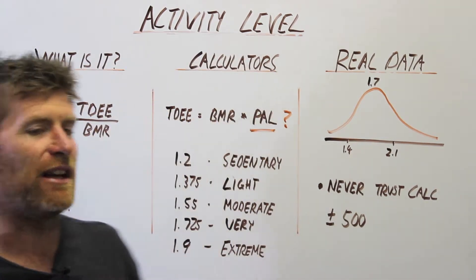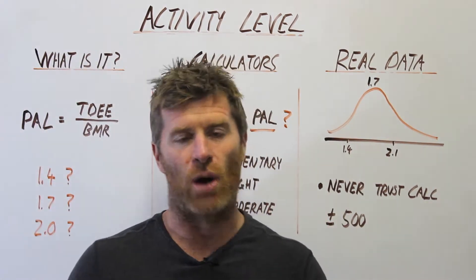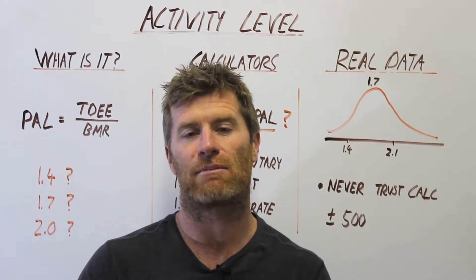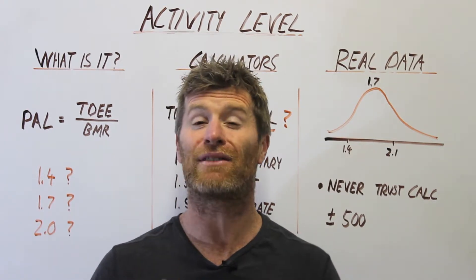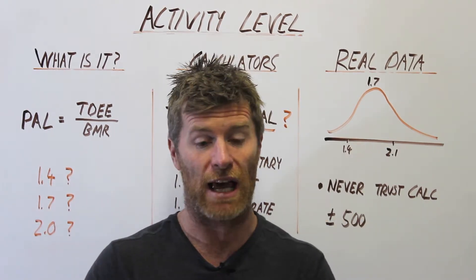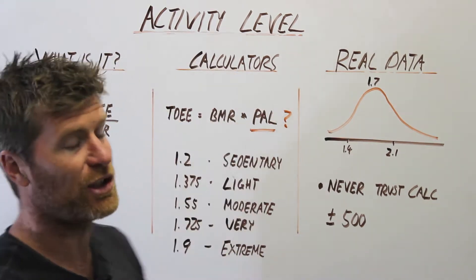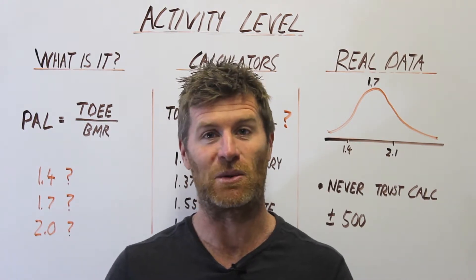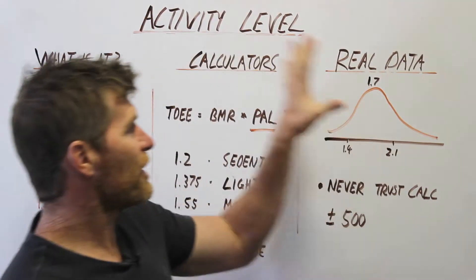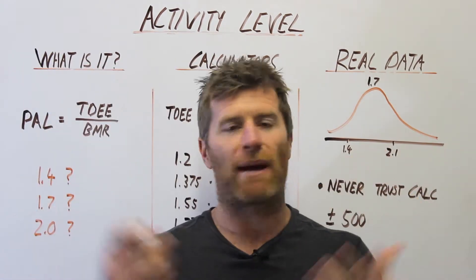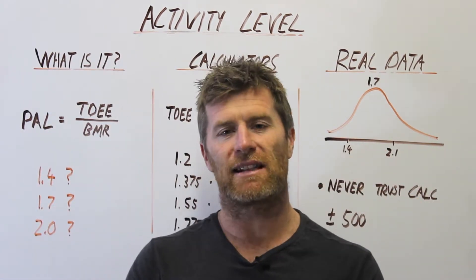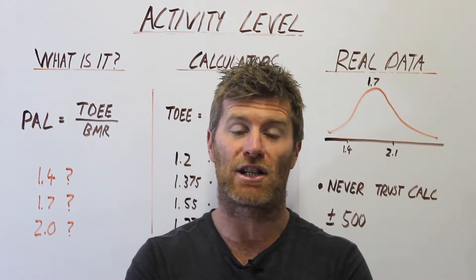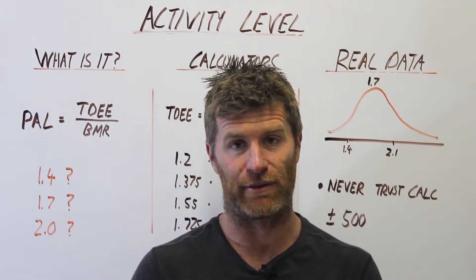Basically, your physical activity level — you're never really going to know it. If you track your calories accurately and make a decent estimate of your BMR, you can kind of reverse-engineer it, but even then it'll be super inaccurate. What I'm going to show you now is that these calorie calculators are just kidding themselves when they give you a number. I grabbed an appendix from the dietary reference intakes in America and reverse-engineered it from the basal metabolic rate and total energy expenditure to work out what some real activity levels look like.